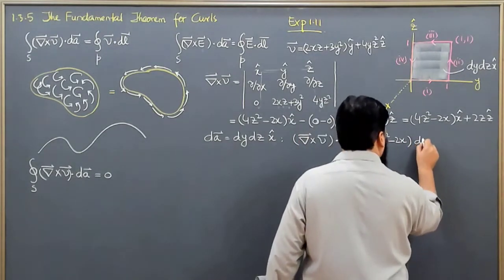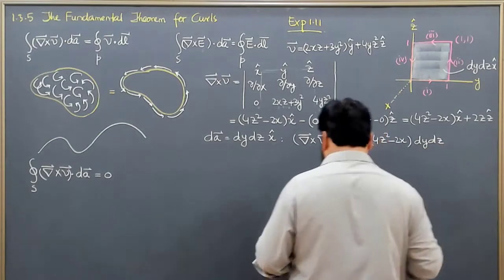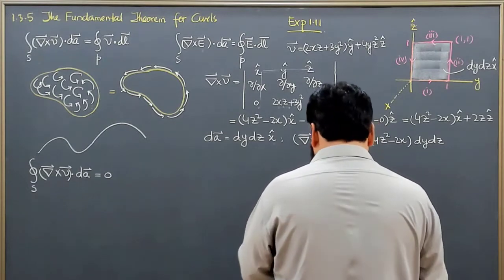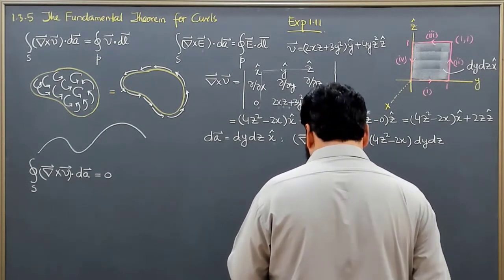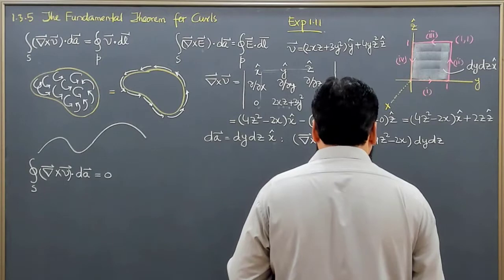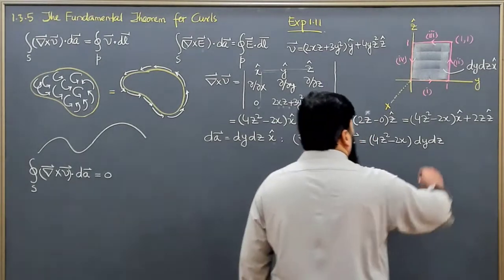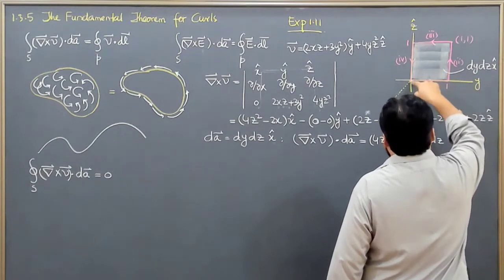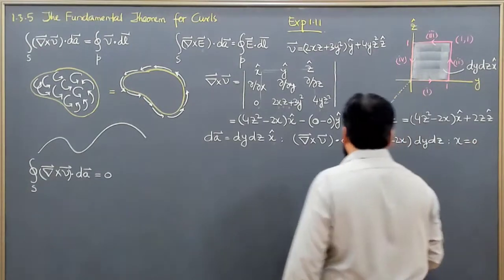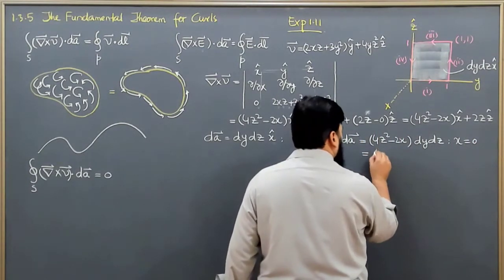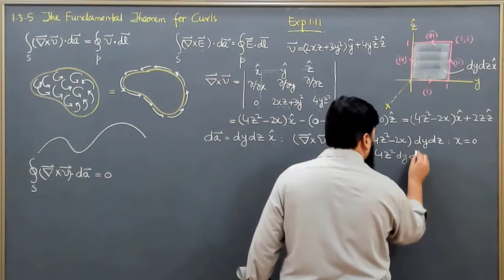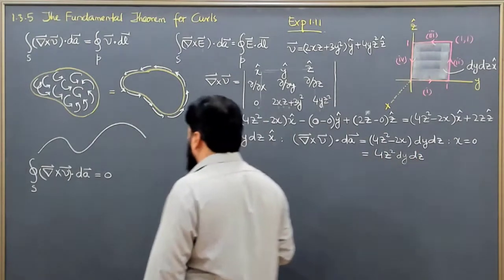So this comes out to be equal to 4z squared minus 2x, and da is dy dz. Now, as I know, along this square the value of x is equal to 0, so del cross V dot da will come out to be 4z squared dy dz.